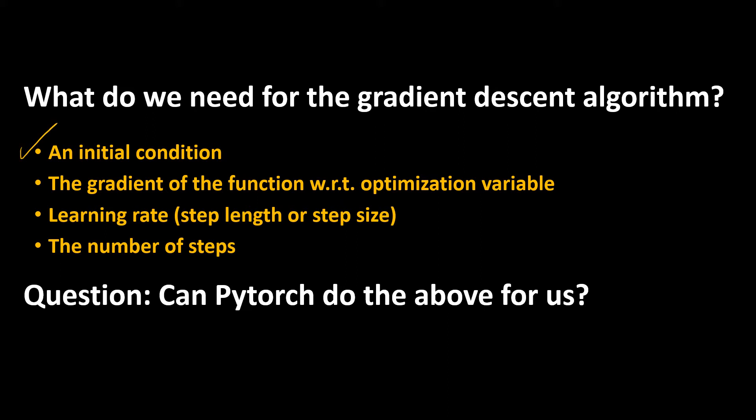Second we should know what the optimization variable is and third, learning rate or step length or step size. The two last ones are the names that are used in the optimization literature. Finally we need the number of steps that we use to decrease the function value.